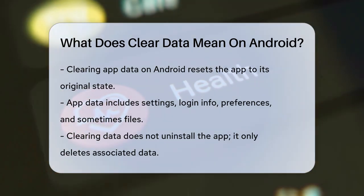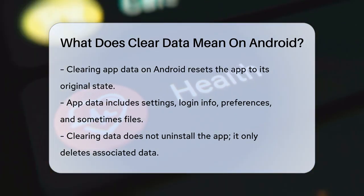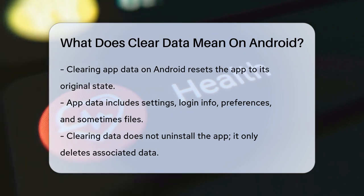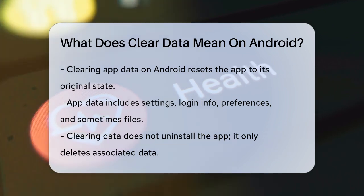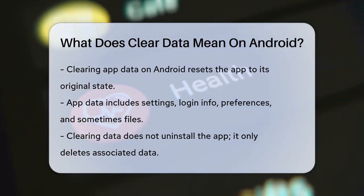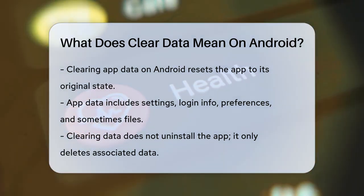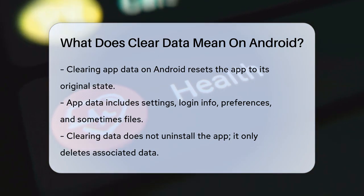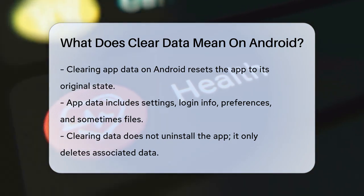When you use an app, it stores various types of data on your phone. This data can include settings, login information, preferences, and sometimes even files like photos or videos.